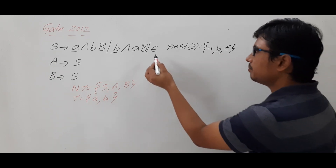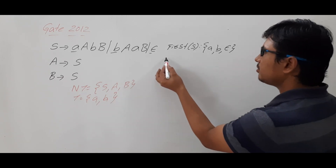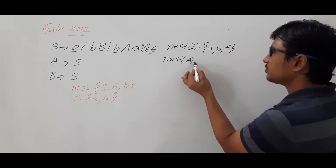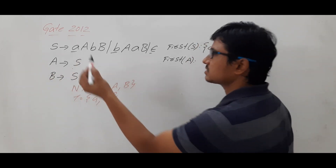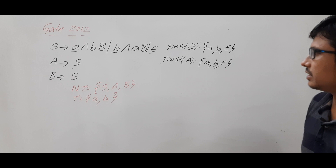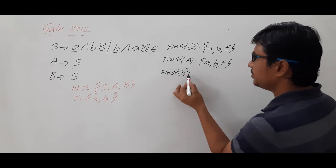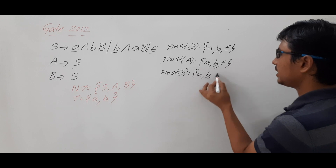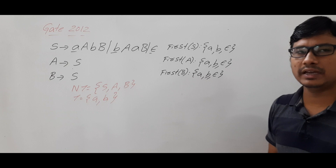By this time I think everyone knows how to compute the FIRST of a non-terminal. Now I want to compute FIRST of A. FIRST of A is equal to FIRST of S, which is {a, b, ε}. Similarly, FIRST of B is equal to FIRST of S, which is again {a, b, ε}. So we got FIRST of S, A, and B all as {a, b, ε}.